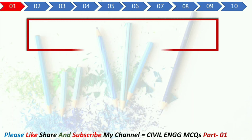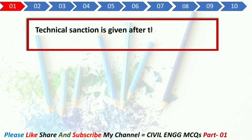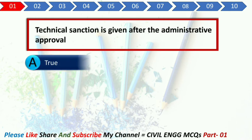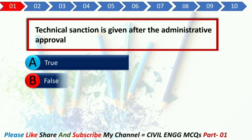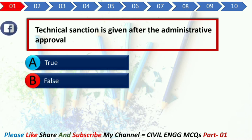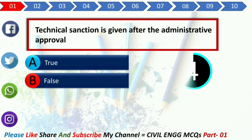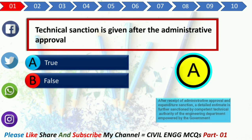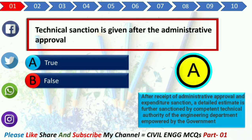Q1. Technical sanction is given after the administrative approval. Option A: True. Option B: False. Your correct answer is Option A. Explanation: After receipt of administrative approval and the expenditure sanction, a detailed estimate is further scrutinized by a competent technical authority of the engineering department empowered by the government.